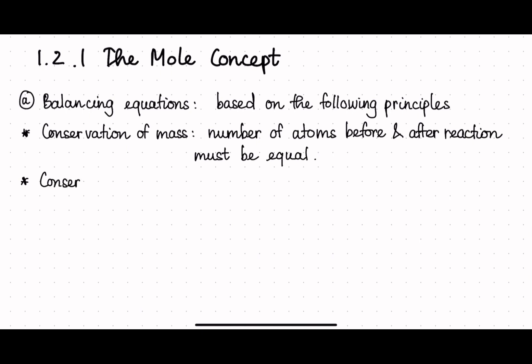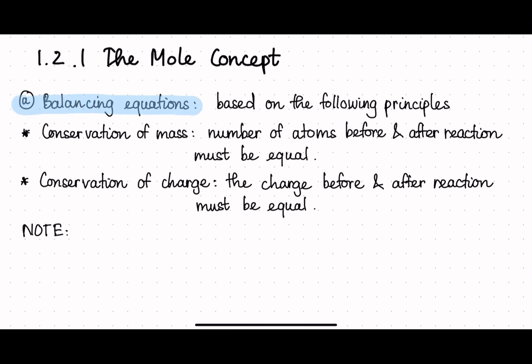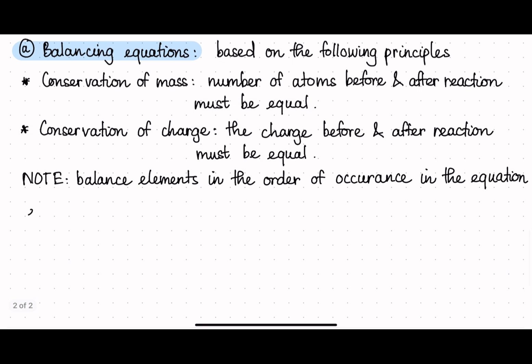And the second conservation law is conservation of charge, so that means the charge before and after the reaction must also be equal. So this means if the charge overall on the before reaction side is neutral, the charge on the after reaction side must also be neutral. This will come in handy a lot if you need to write half equations, because that's when a lot of the charges start to appear. And a note is that we should balance or try to balance the elements in the order of occurrence in the equation, so that is easier.